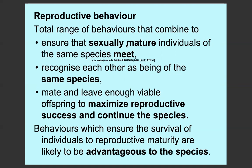The individuals must be sexually mature and they have to be of the same species, because if something is of the same species, when they reproduce they must produce fertile offspring. For example, we know that a donkey and a horse can reproduce and produce a mule, but mules are not fertile. So that means a horse and donkey are not the same species.